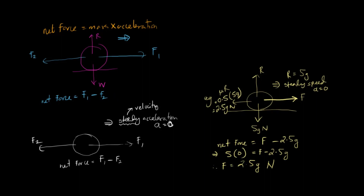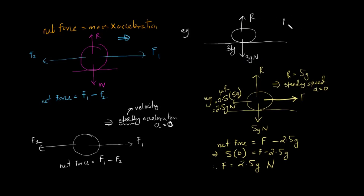If we have another situation where we have an object on a surface, the mass is 3 kg. So this has a weight of 3G Newton and a reaction force R, so R equals 3G Newton. If this is moving forward with a force of 25 Newton, there is friction, and friction is mu R, so that is 3mu G Newton.